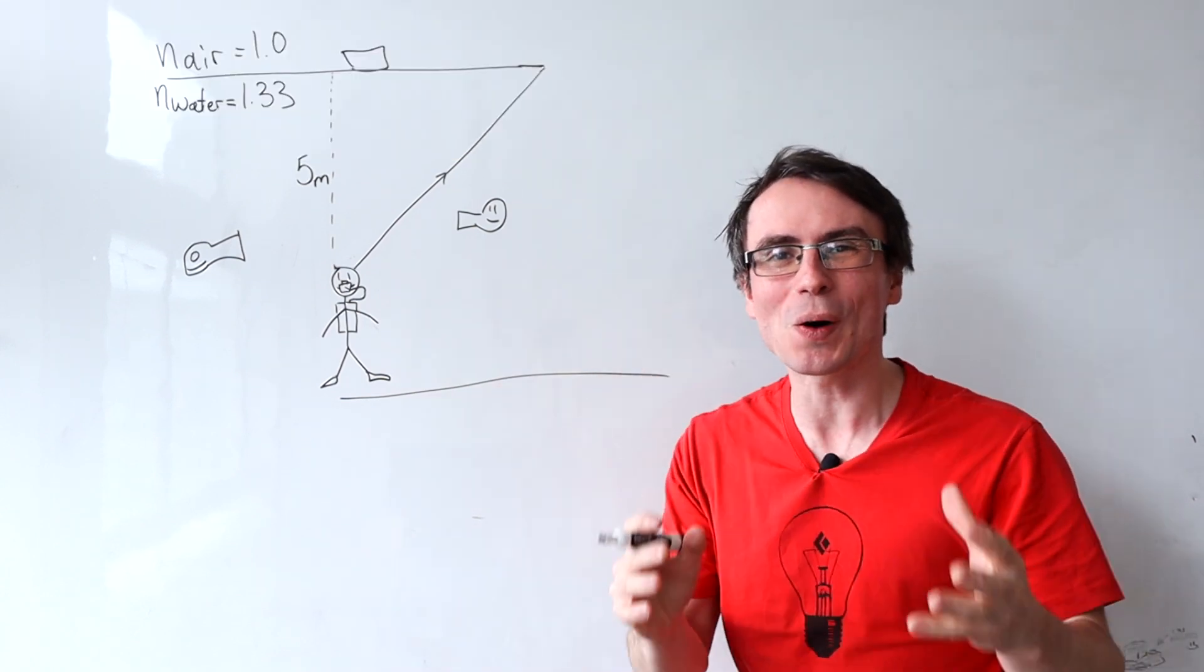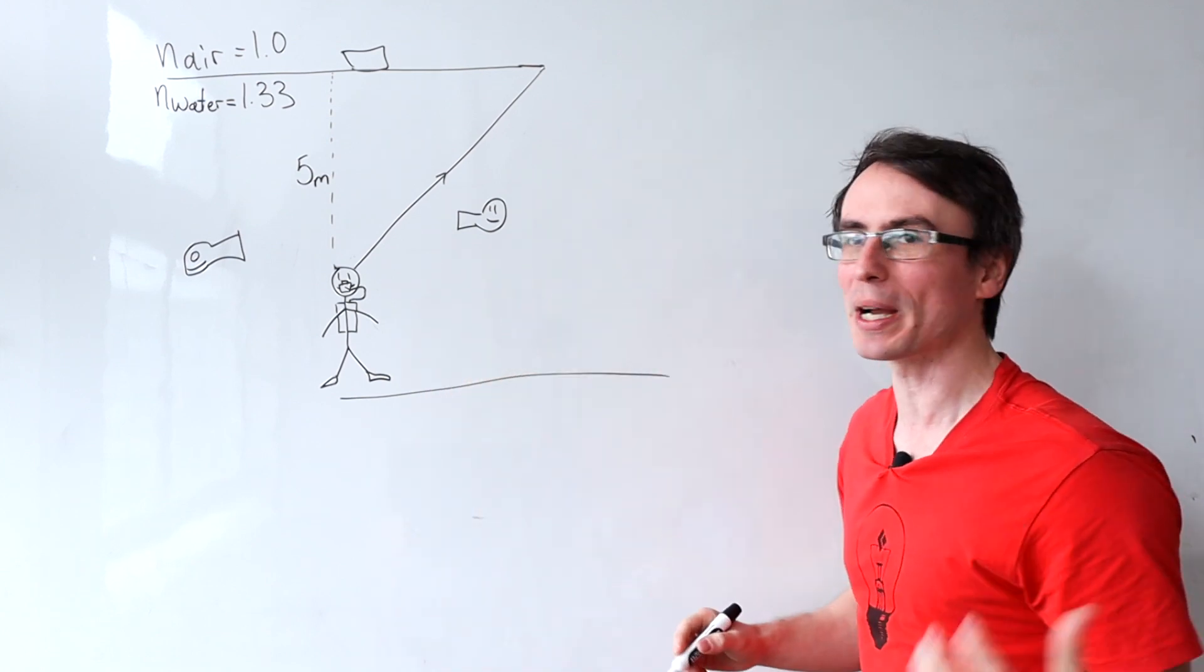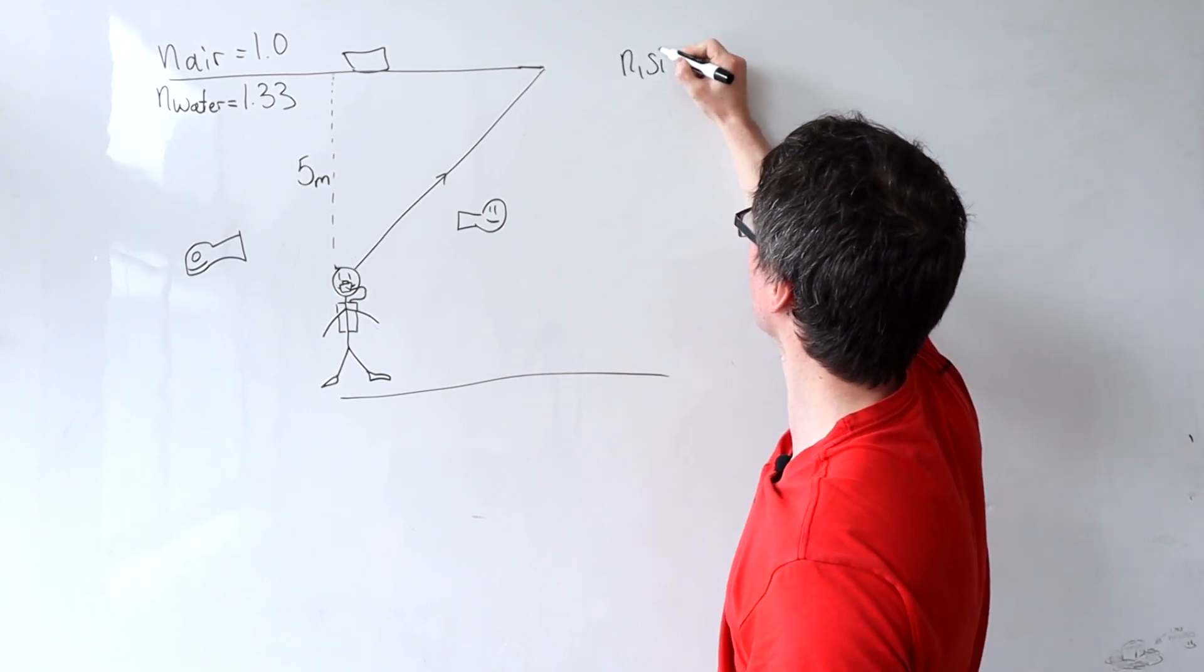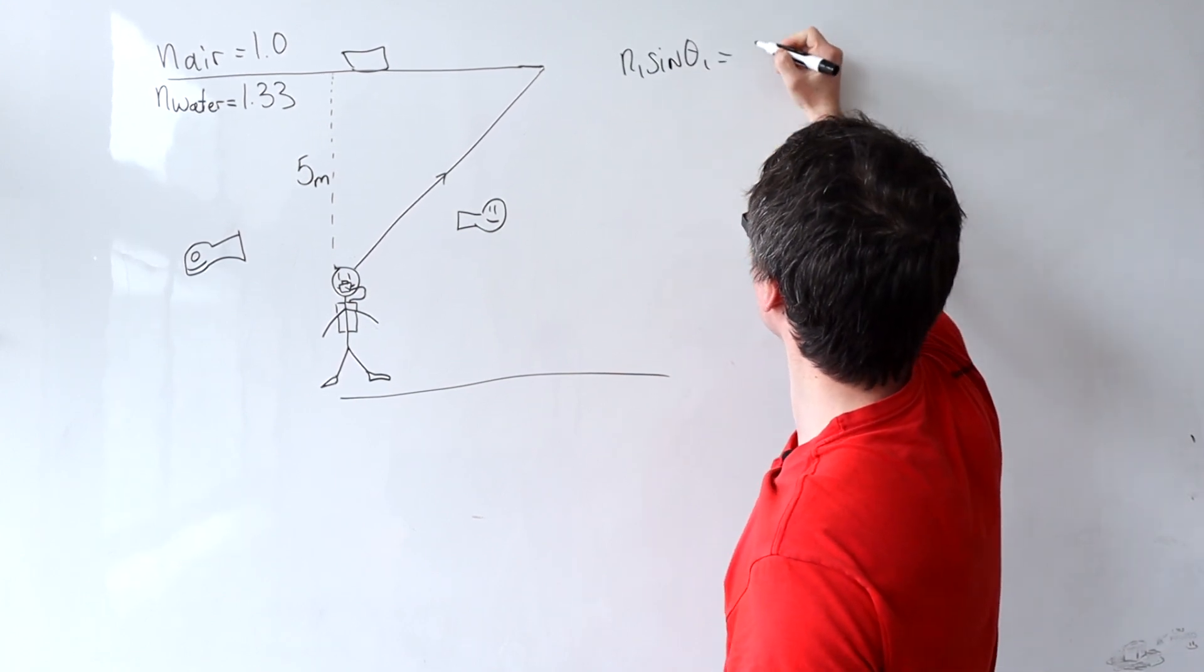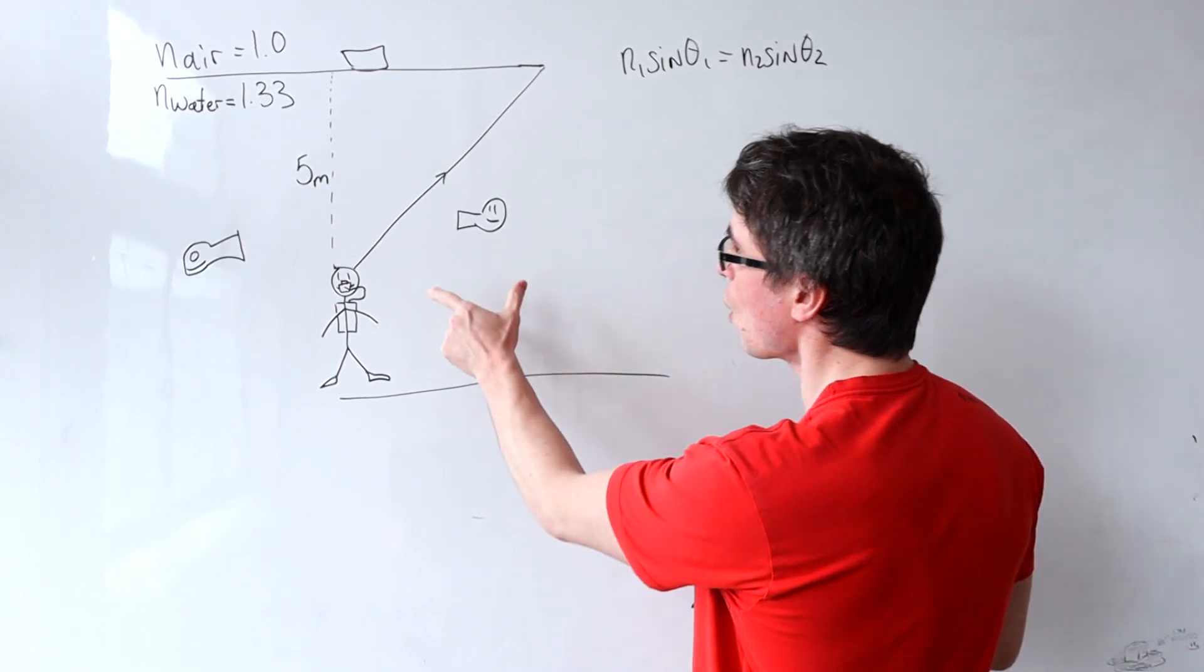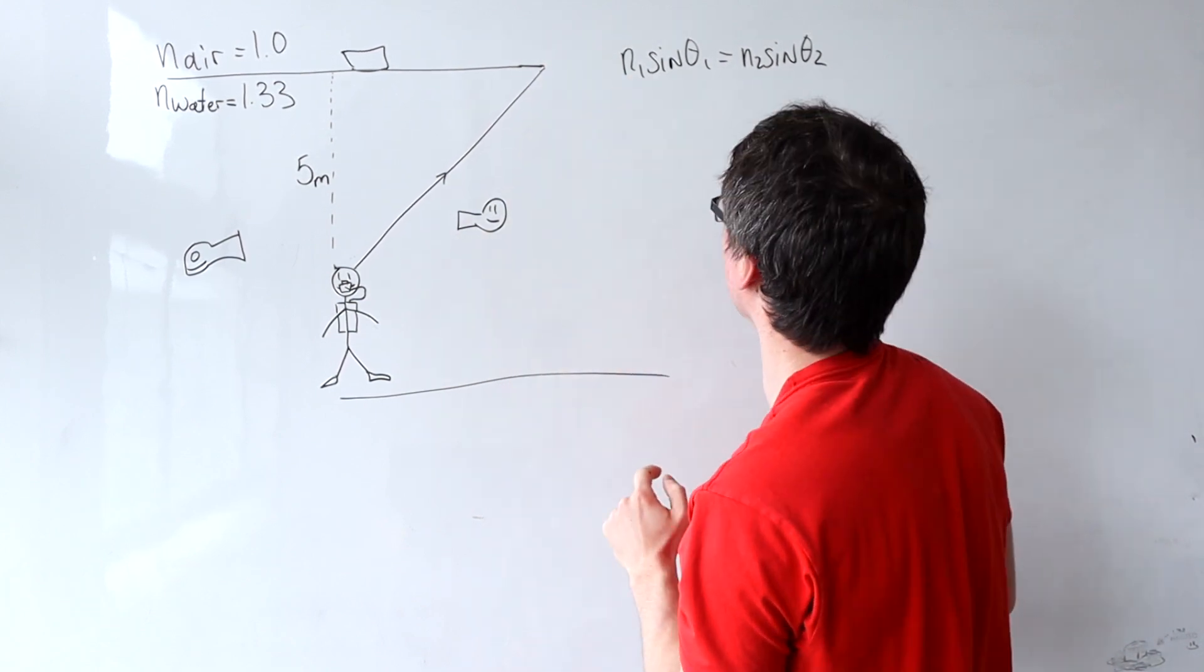This is caused by total internal reflection, so I'll write down Snell's law: N1 sine theta 1 equals N2 sine theta 2 for light rays going from water to air.